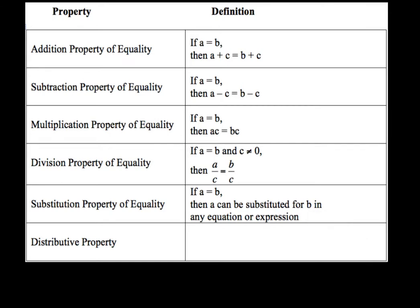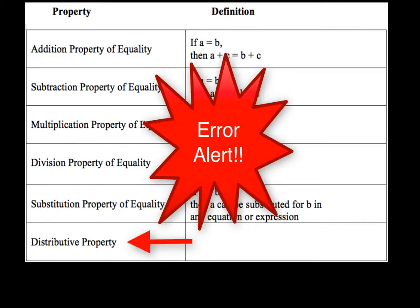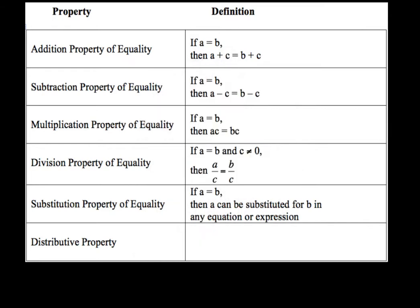Now notice the last property that we have here is the distributive property. There is no 'of equality' on the end of this. So when we go to use these in proofs, anytime you use this property, you're just going to call it the distributive property — it is not the distributive property of equality. The distributive property says A times the quantity B plus C is equal to AB plus BC. And we're going to take a look at this in our first algebraic proof.